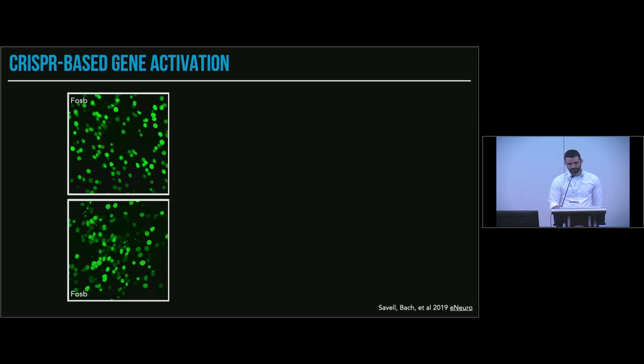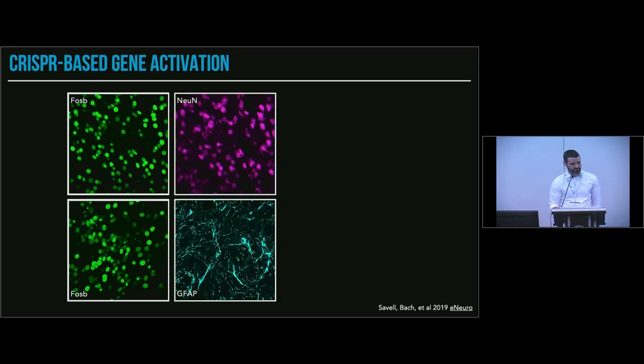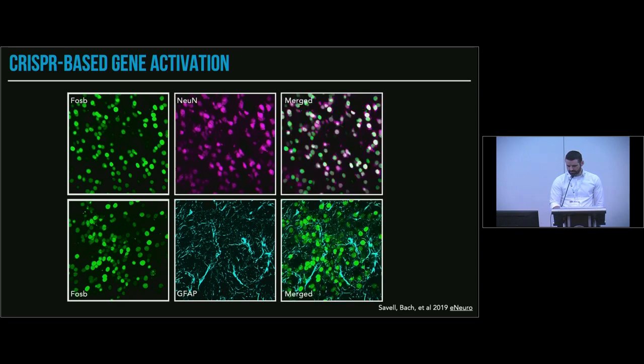Because we're using the human synapsin promoter, which is usually active in neurons, we predicted that the FosB induction would be occurring only in neurons. Using some confocal microscopy, we were able to confirm this. This image just confirms that nuclear localization of FosB in two different slices. We co-stain for either NeuN, which is a neuronal protein that's also found in the soma and nucleus of a cell, and GFAP, which is a glial cell marker. What I hope you can see here is that if we merge these images, there's really nice co-localization of FosB with NeuN and not with GFAP, indicating that the upregulation is occurring specifically in neurons in this case.